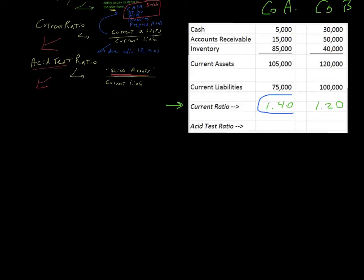We want the current ratio to be high within reason. So company A wins. Or said a better way, if we use the current ratio as a measure of solvency, company A is better able to pay off its short-term debts.